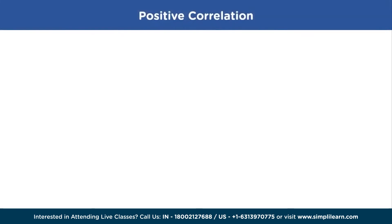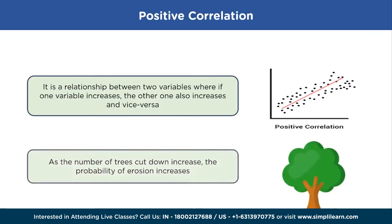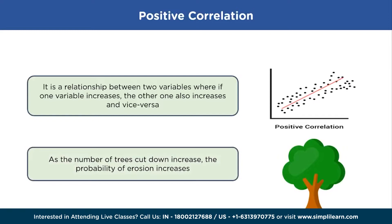There are mainly two types of correlation. The first one is positive correlation. A positive correlation means that the linear relationship is positive and the two variables increase or decrease in the same direction. For example, the number of trees cut down and the probability of erosion are in correlation — when one increases, the other also increases, and vice versa.